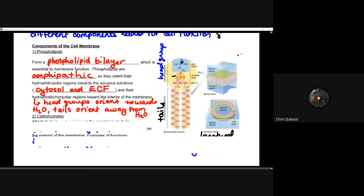The head groups orient themselves towards water; the tails orient themselves away from water. I cannot stress how important this is, because throughout the rest of this class — as we learn about how cells communicate, how cells transport things in and out, how they get certain functions completed — it all has to do with the concept that the phospholipid bilayer allows for that separation of water on the outside from water on the inside of that cell, so it can create that concentration gradient. The hydrophobic nonpolar regions point towards the inside, and the hydrophilic polar regions point towards the outside, towards water.